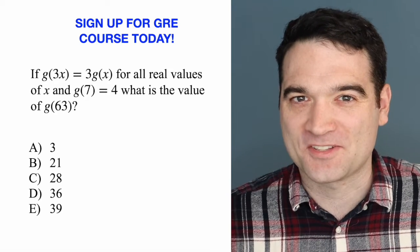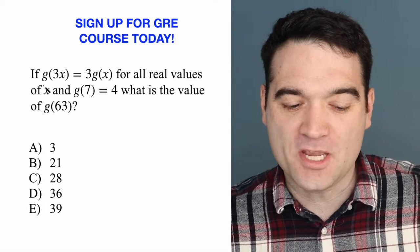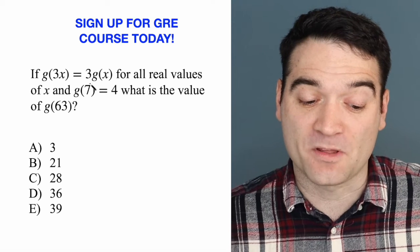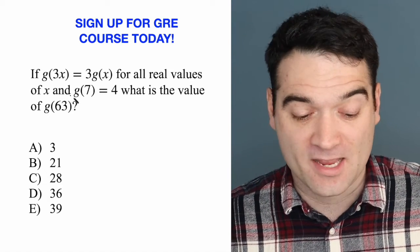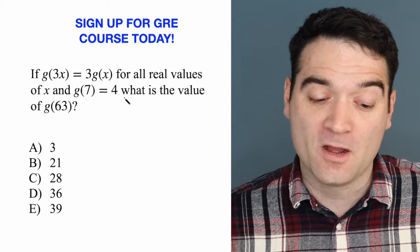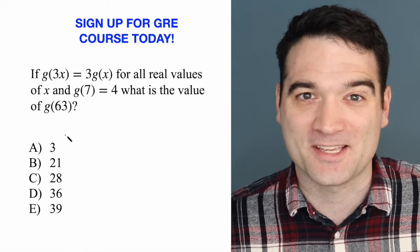Here's a GRE algebra question. Let's take a look. If g of 3x is equal to 3 times g of x for all real values of x, and g of 7 is equal to 4, what is the value of g of 63?